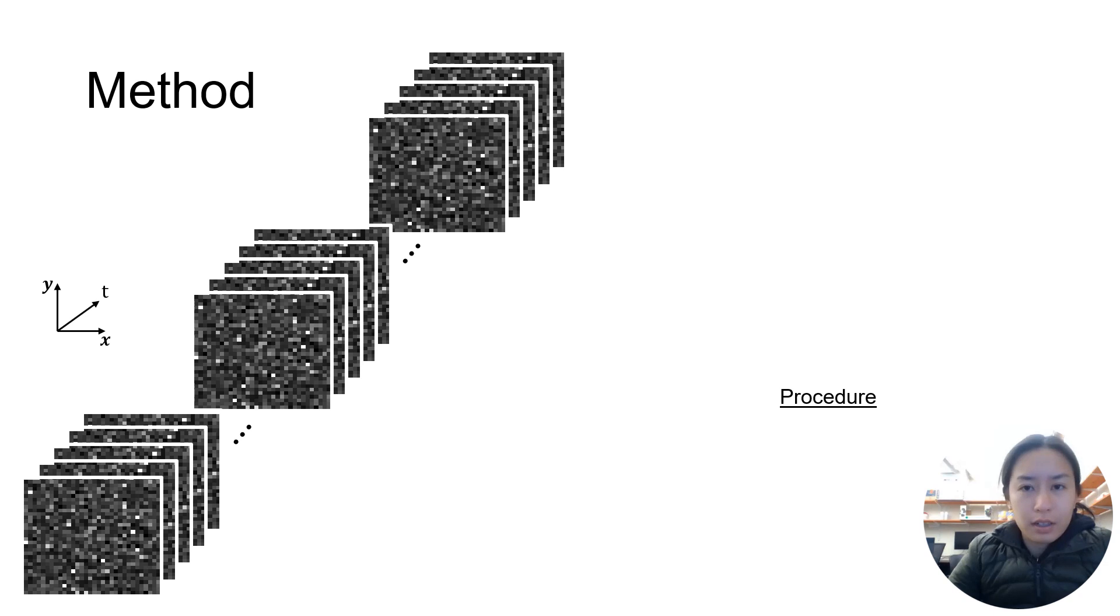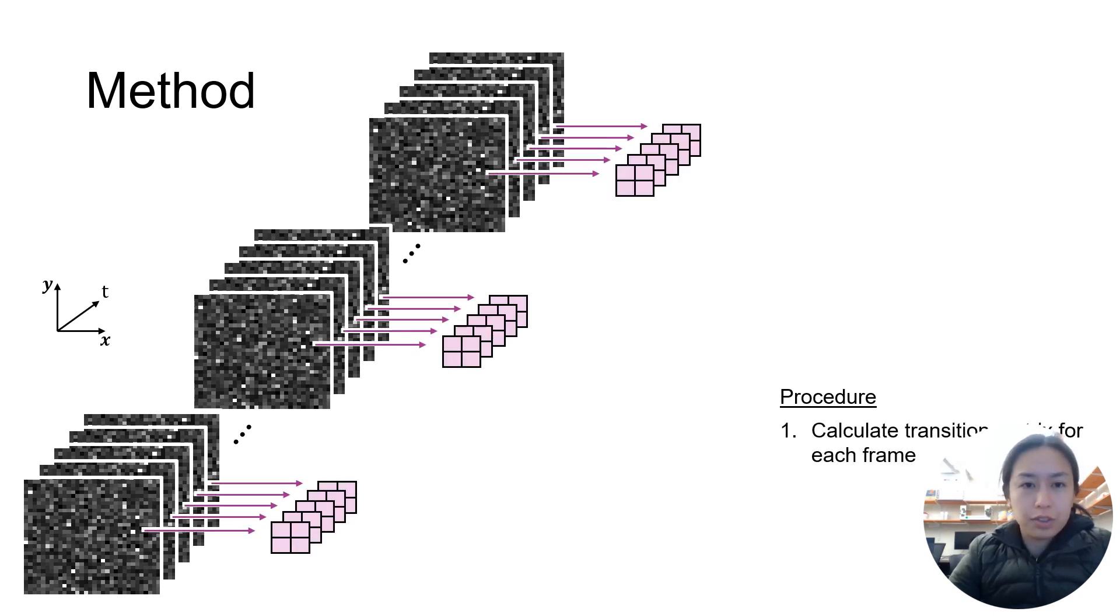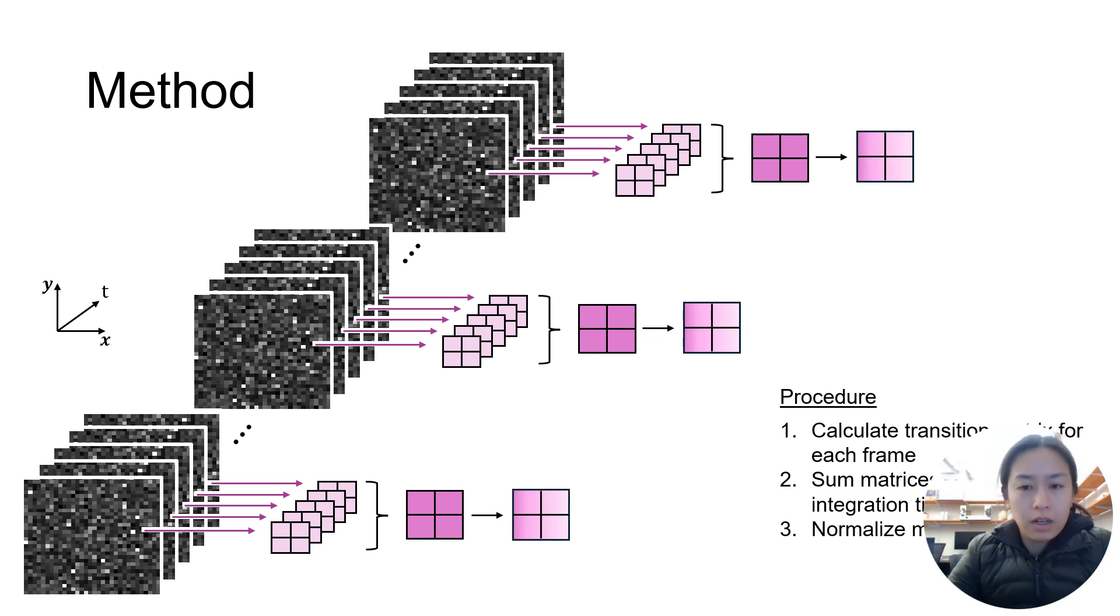So just an overview of the method. Here's a time trace of the sensor frames. First, we calculate the transition matrix for each frame. Afterward, we can sum these transition matrices across frames to a desired sampling rate or integration time. We then normalize the matrices by row and calculate the eigenvalues and take the ratio.